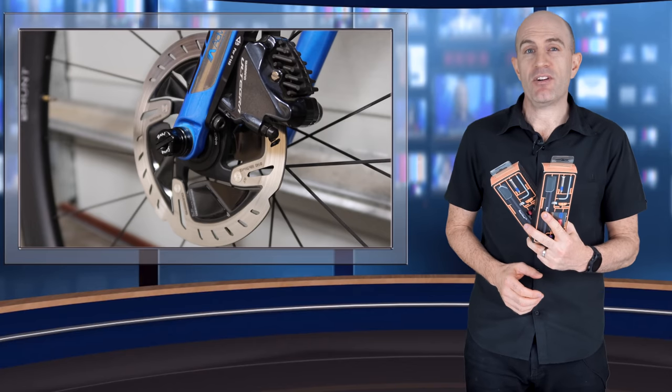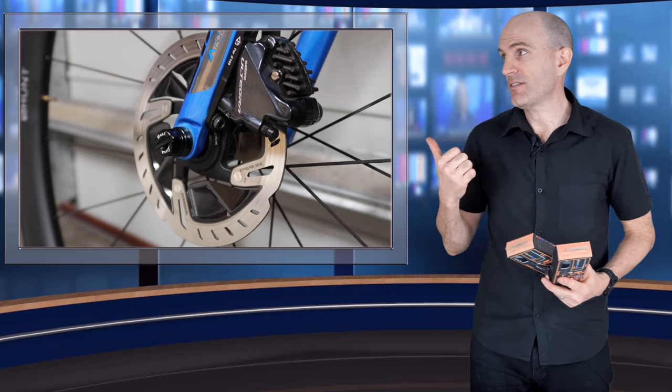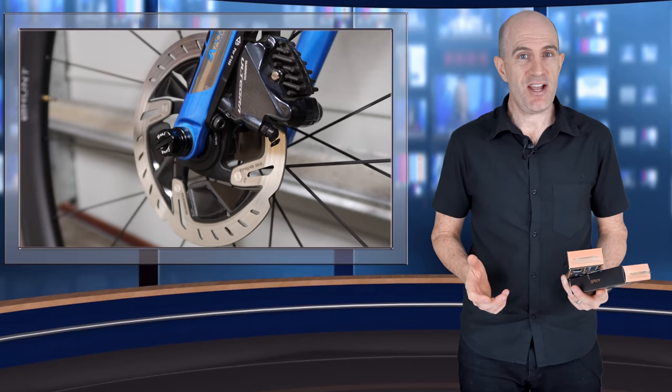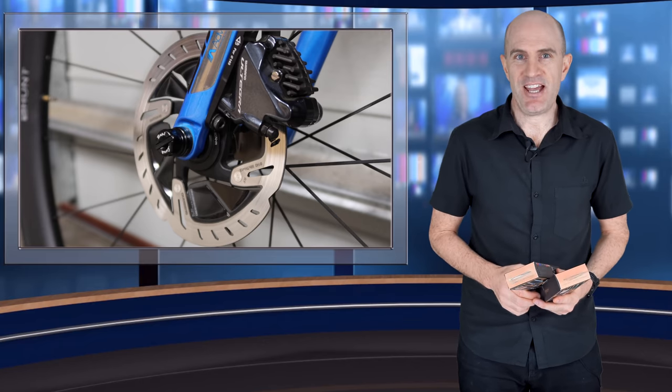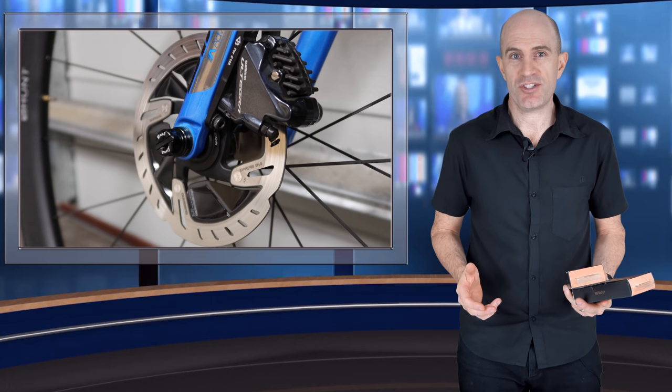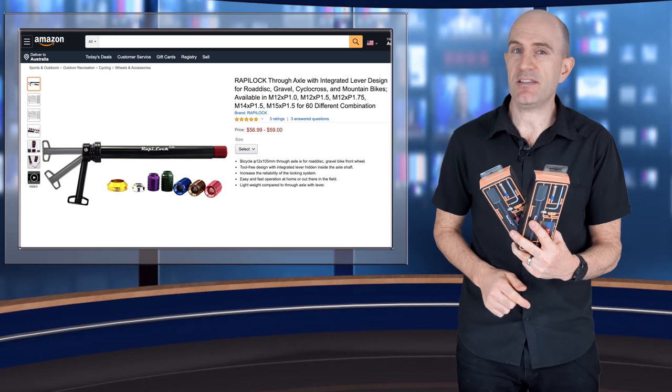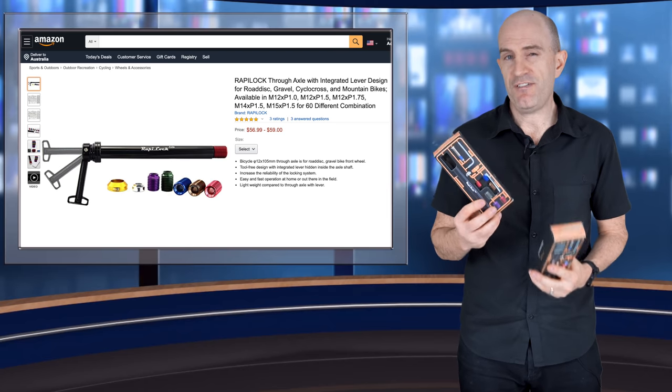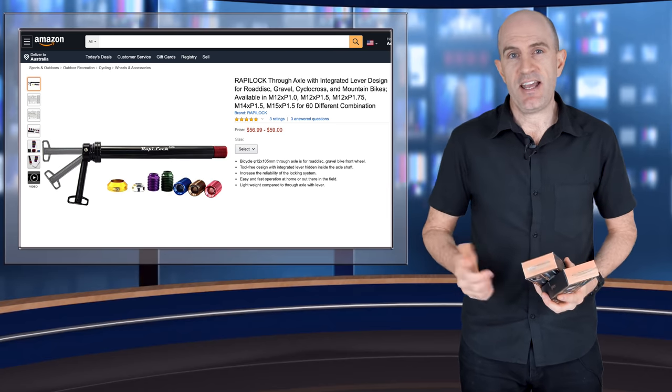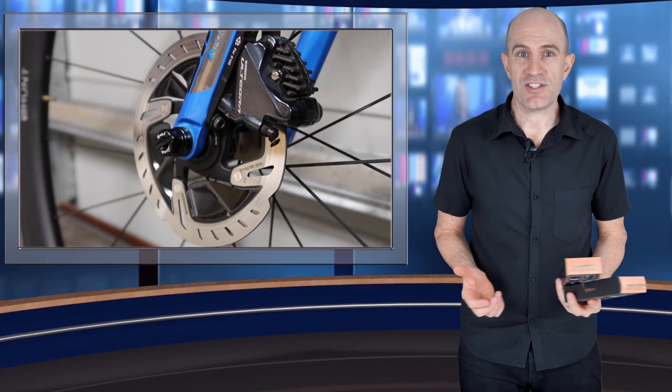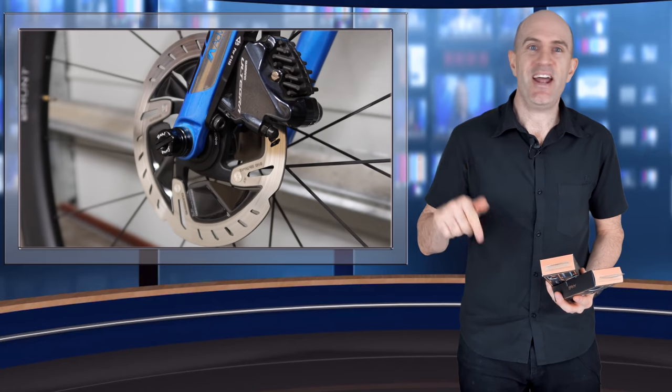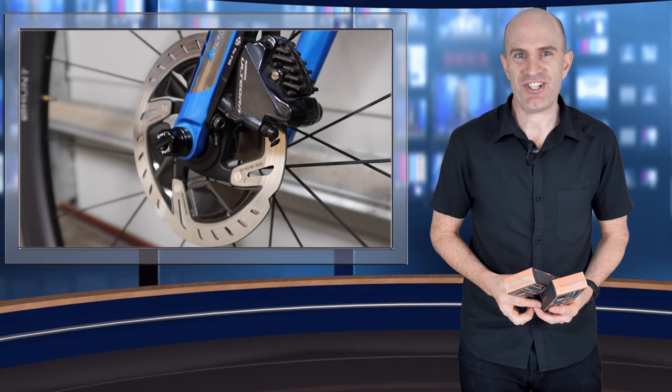So there we are. The Wrappy Lock road through axle kit, configured and installed over on my Giant TCR. It turned out pretty neat. And also we had a closer look at their trainer through axle and how that worked on the Cyclops Fluid 2. I'll put links in the video description below where you can pick these up. Over on Amazon they go for around $59 US each, and the trainer axle goes for around $44. As always, if you've liked this video, give it a thumbs up and hit subscribe to support this channel. It's much appreciated. We'll see you soon. Thank you.